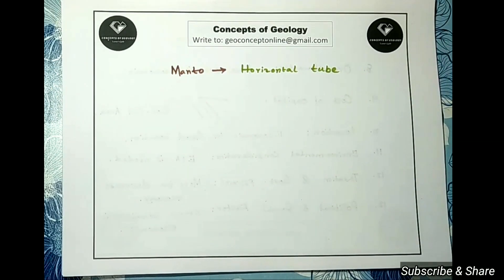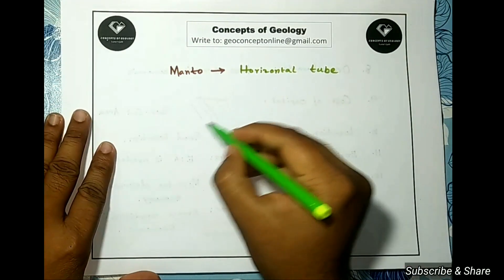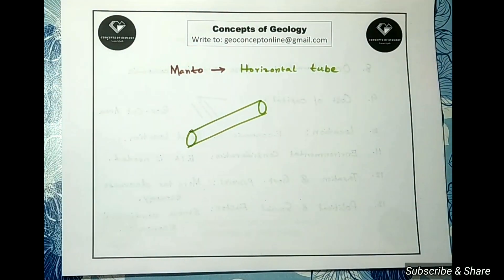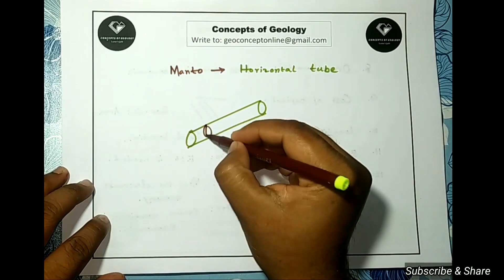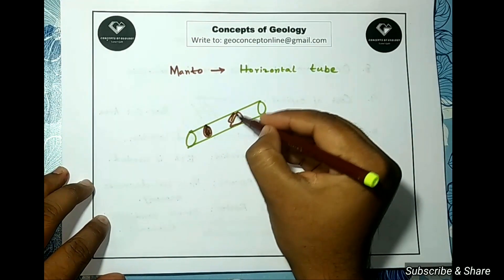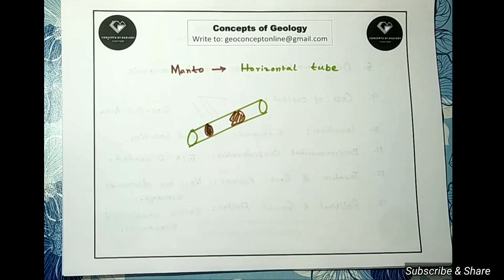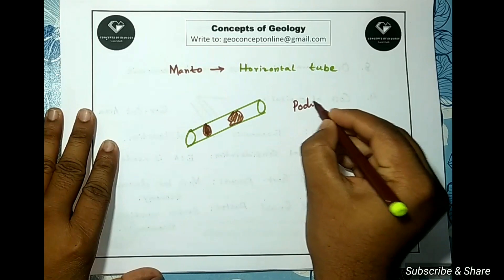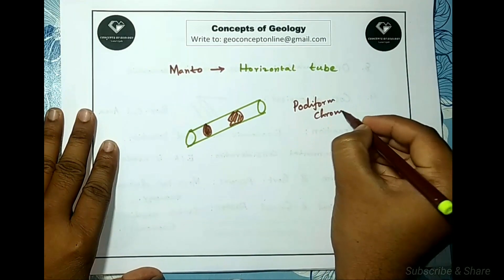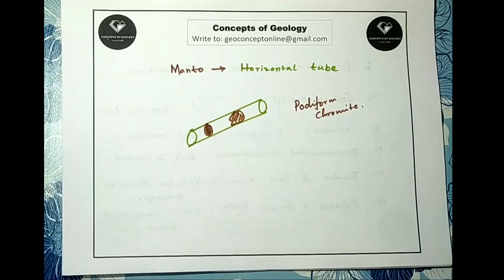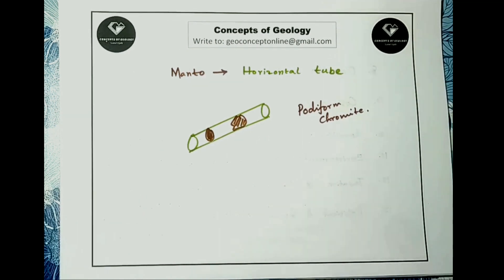Some tubular deposits formed by sub-horizontal flow of mineralized fluid have discontinuous ore grade — the entire body cannot be considered ore. Rather, the ore has a pod-like shape at intervals along the body, while the rest has lower grade. These are called pod-shaped or body-form deposits because of their pot-like shapes. A well-known example is pod-shaped or body-form chromite deposits.